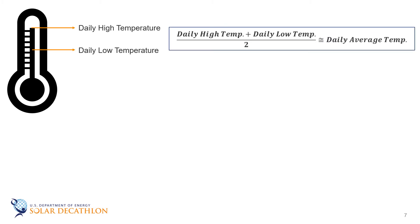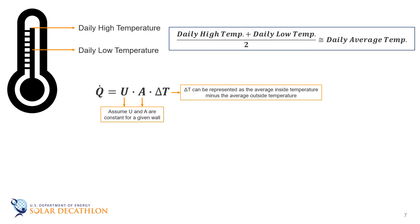When we think of our Q dot equation, if the value of U and A are constant, which is not a bad assumption, and if the wall has minimal thermal mass to store heat, then the delta T can be represented by an average temperature difference. This is quite a long list of ifs. Therefore, we will approximate the delta T of the average inside temperature minus the average outside temperature over the course of a day.